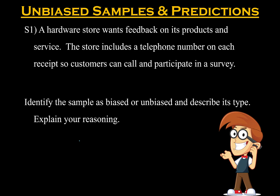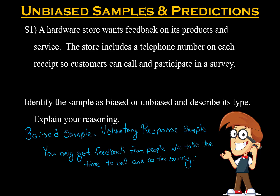A hardware store includes a telephone number on its receipt for customers to complete a survey and provide feedback on products and service. This is a very biased sampling because it is based on a voluntary response. Only the people who choose to make that phone call are going to be the ones providing their opinions. The ones that don't have the time or don't want to bother will not be providing their input, even if they have strong opinions about certain services at the store.